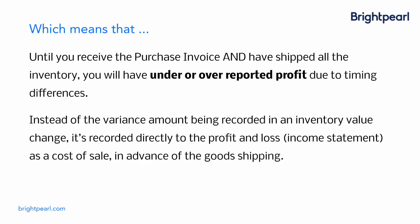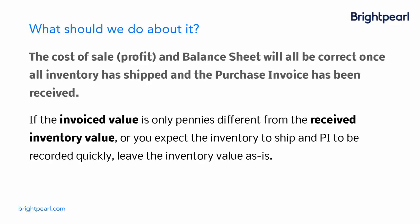Until you've received the purchase invoice and shipped all the inventory, you'll have under or over reported profit due to the timing differences — the variance amount is recorded directly to the profit and loss report in advance of the goods shipping. Just to reiterate: the cost of sale, your profit reporting, and your balance sheet will all be correct once all inventory is shipped and the purchase invoice has been received. If the invoiced value is only pennies different, or you expect the inventory to ship and the purchase invoice to be recorded quickly, leave the inventory value as is — everything will work out just fine.